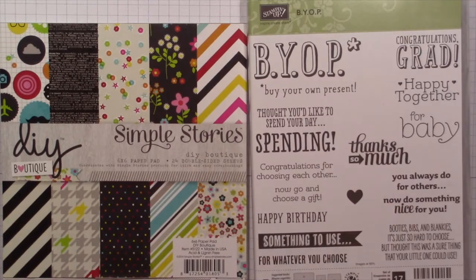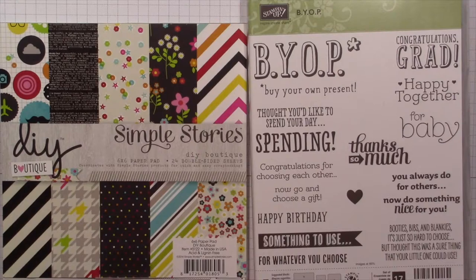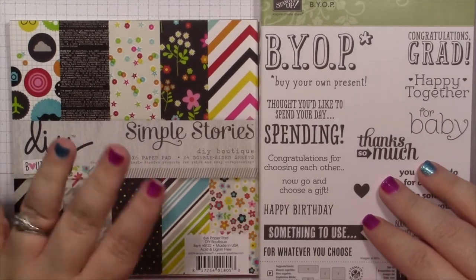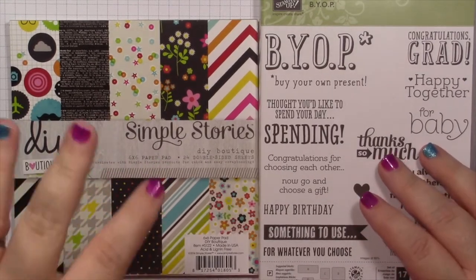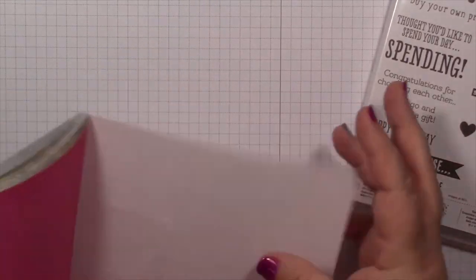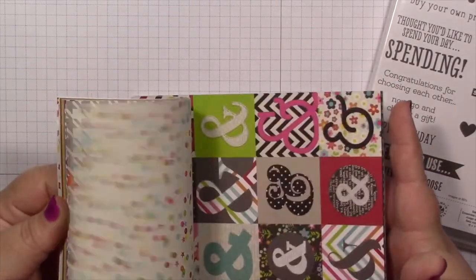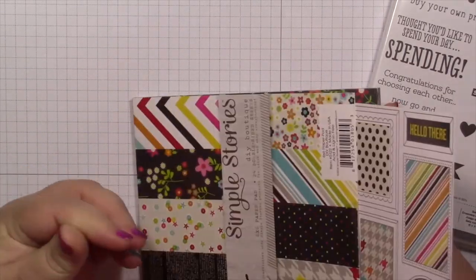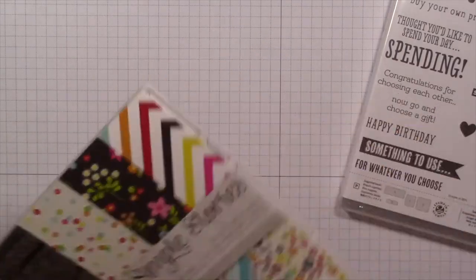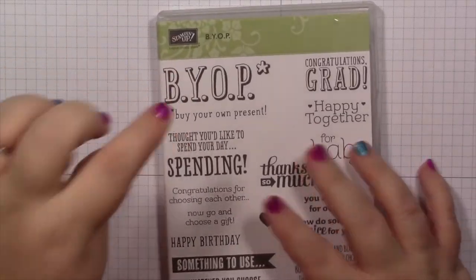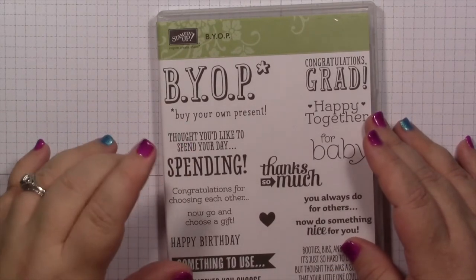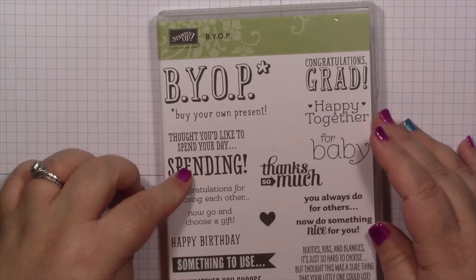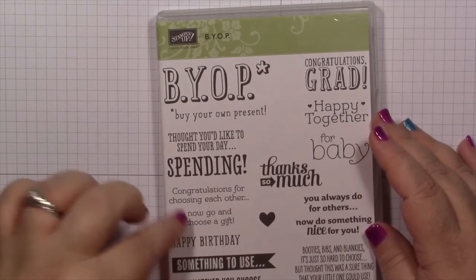This is available right now in the Occasions Mini Catalog. BYOP stands for 'buy your own present,' and we're sending her either a gift card or some cash for her birthday, so I thought this would be a perfect stamp set for that. I'm going to be using the Simple Stories DIY Boutique. I love the colors in this paper stack. They remind me of a fun teenager, and she's turning 16, so I thought these would be absolutely perfect. I'm going to use BYOP 'buy your own present' on the outside and then 'thought you'd like to spend your day spending' and 'happy birthday' inside.